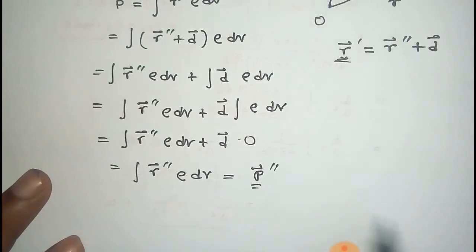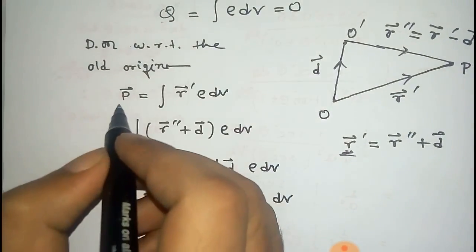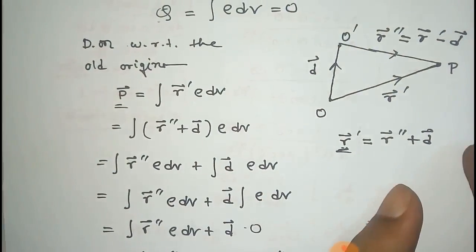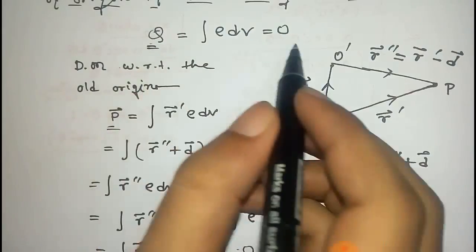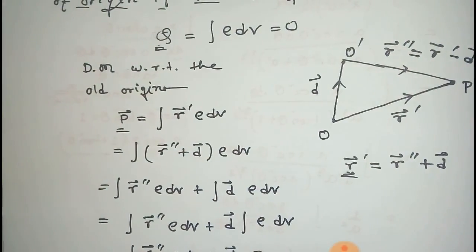This is the dipole moment with respect to the new coordinate system, that's integral r double prime ρ dv. Thus we get that P vector double prime and P vector, that is dipole moment, is the same in both cases when the total charge is zero.